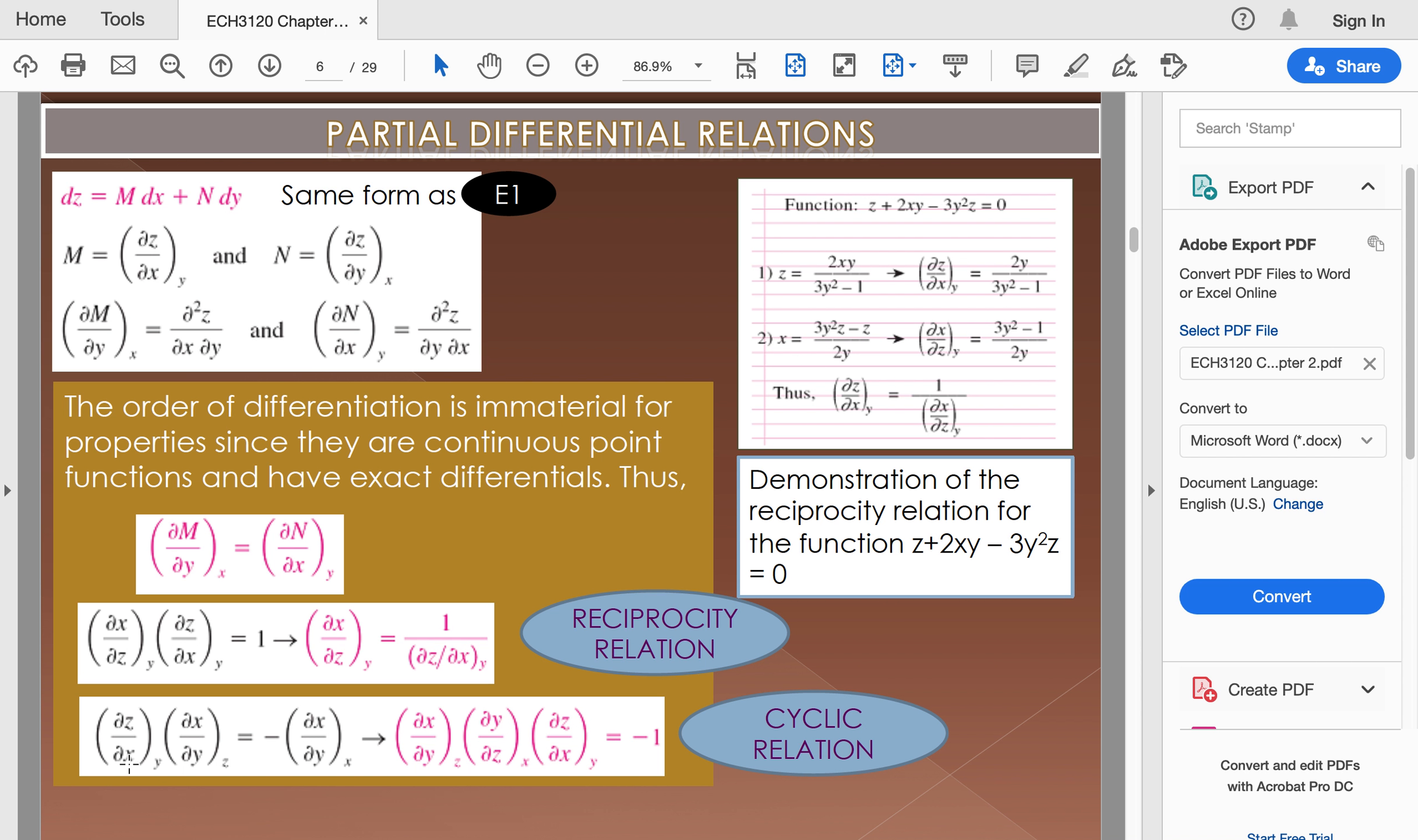Derivative z per derivative x times derivative x per derivative y to z equals negative derivative x per derivative y, which we can rearrange to make it like this x per y. So in this cyclic reaction...